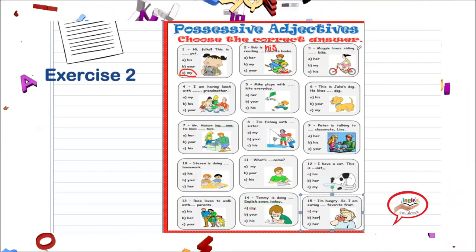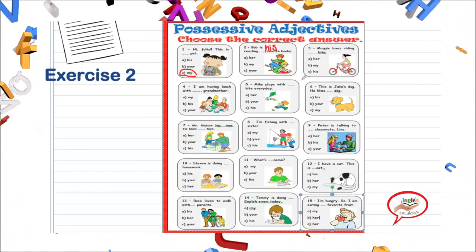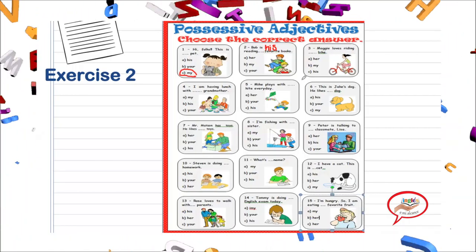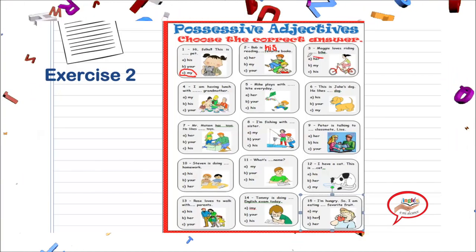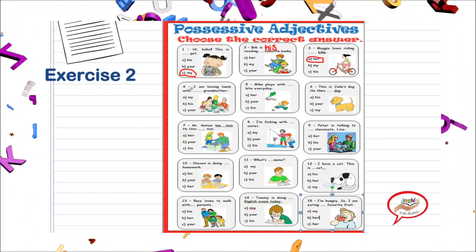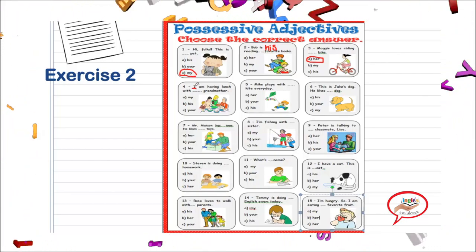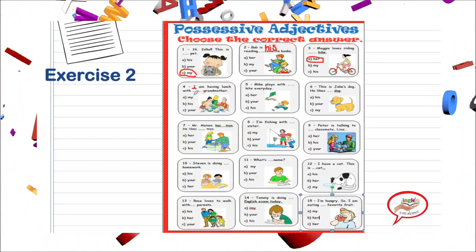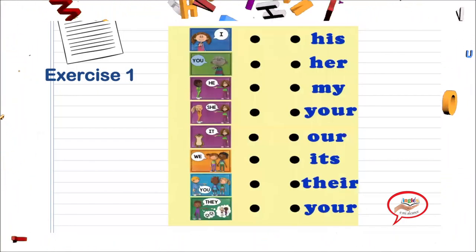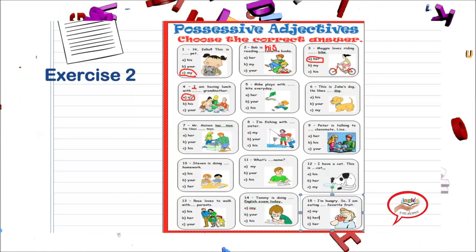Maggie loves riding her bike. Maggie — sabemos que es el nombre de una chica, una niña. Entonces ¿cuál sería el possessive adjective para ella? Her. Very good. I am having lunch with my grandmother — si estamos hablando de I, vamos a escoger my.